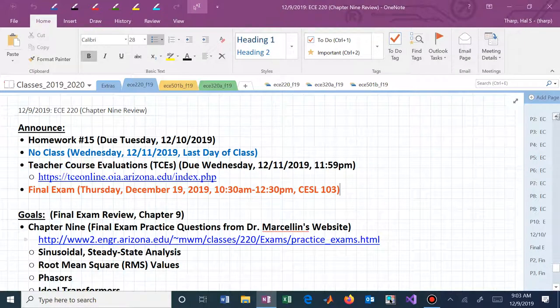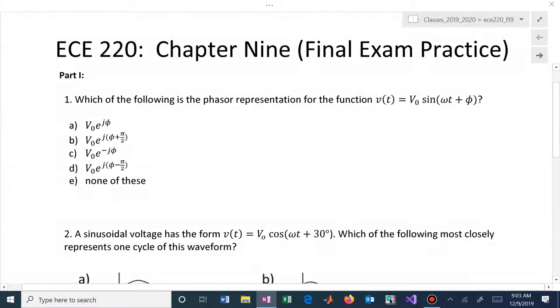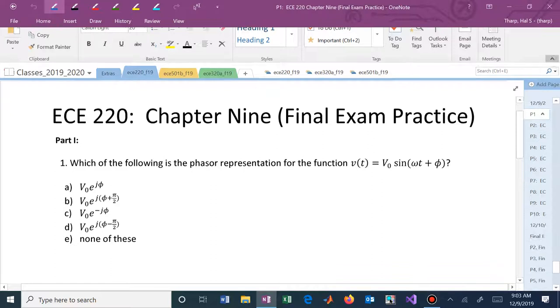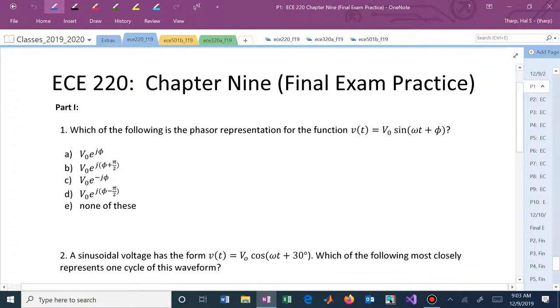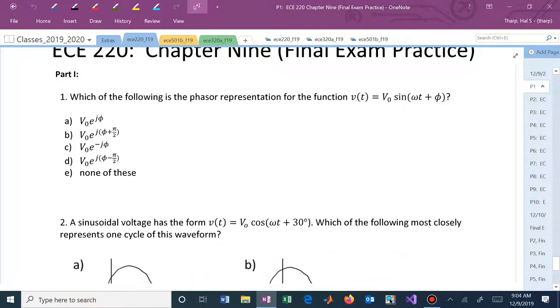This is chapter 9 final exam practice available on the website and D2L. The first question is, which of the following is the phasor representation for the function little v of t: capital V sub 0 sine omega t plus angle phi?